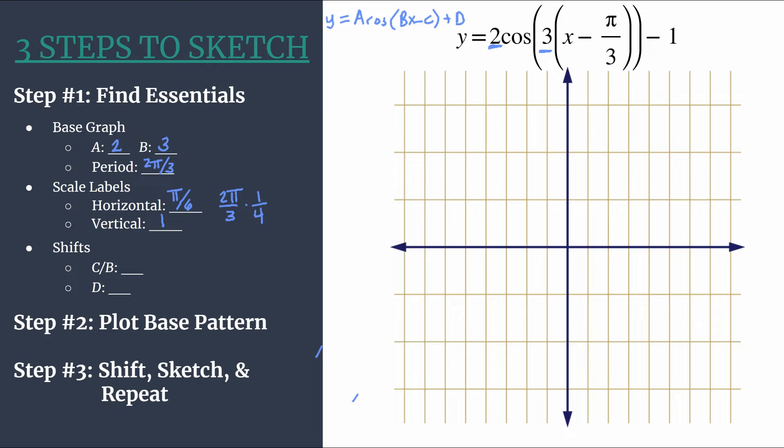So horizontally, we're counting by pi over six. So one pi over six, two pi over six reduces to pi over three, three pi over six reduces to pi over two and four pi over six. Stop here, double check with this setup, with this method, the fourth tick mark to the right of the origin should match your period. It does. So we feel confident we're on the right track.